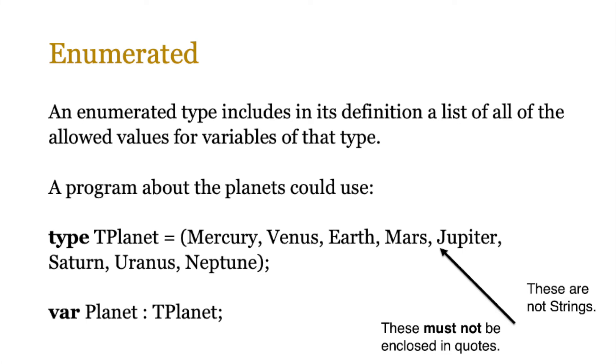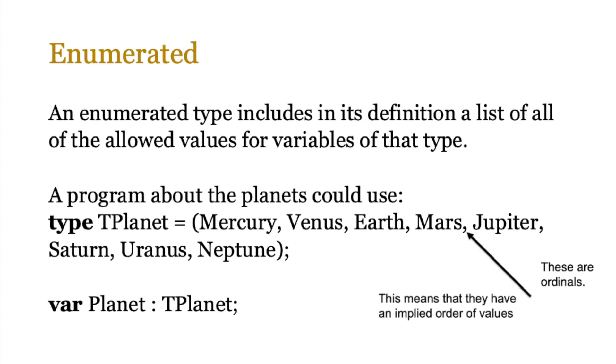Now one of the things you need to notice about an enumerated type is that it says enumerated, so it's numerical in a way. So the list has to be ordered. So when you look at type TPlanet, Mercury, Venus, Earth, Mars, all of those are not strings. They don't have quotes around them. These must not be enclosed in quotes, otherwise you might as well just create an array of perhaps a string data type. Now these values that are enumerated are ordered, and these are actually called ordinals. This means that they have an implied order of value. So Mercury comes first, then Venus, then Earth, Mars, Jupiter, and so forth.